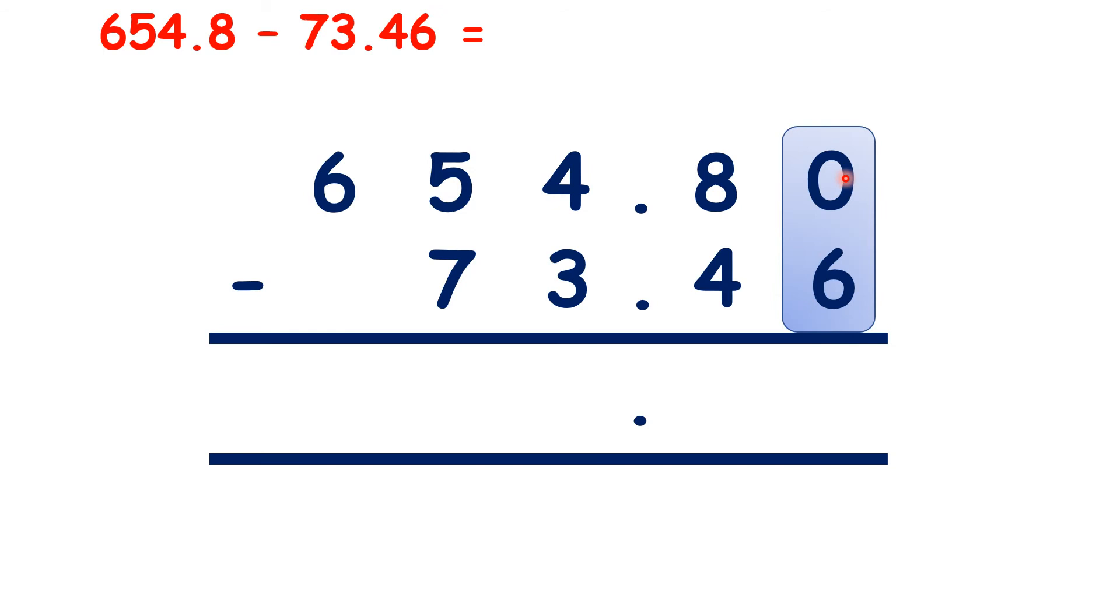Now starting with the hundredths, we can't do 0 minus 6, so let's exchange. Now we have 10 minus 6, which is 4. On to our tenths, 7 minus 4 is 3. 4 minus 3 is 1.